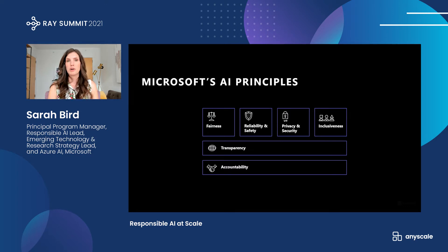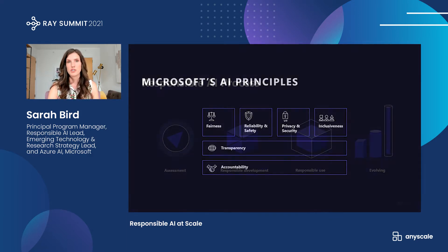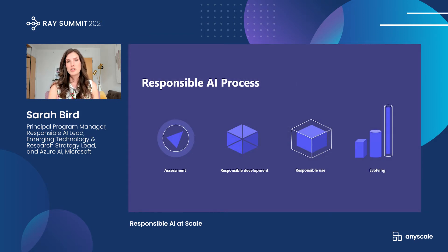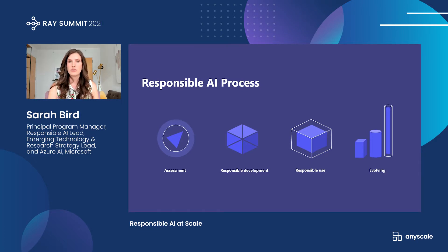At Microsoft, this starts with our responsible AI principles, which we use to guide our development of AI systems and understand which properties we're looking for them to adhere to. We implement our principles in practice using a responsible AI process. The first step of this process is assessment, where we look at a technology and understand what are the potential benefits, what are the potential downsides, what are the risks, what are the unknowns. With this 360 view, we can understand what we need to do to develop the technology responsibly and enable others to use it responsibly.